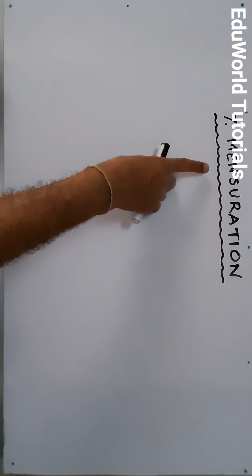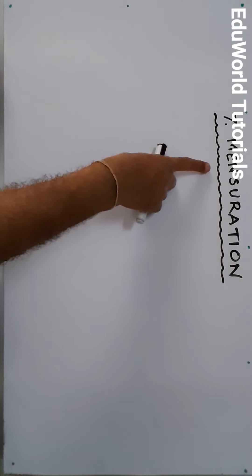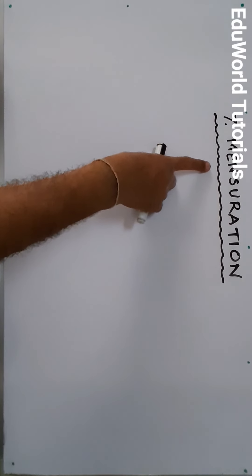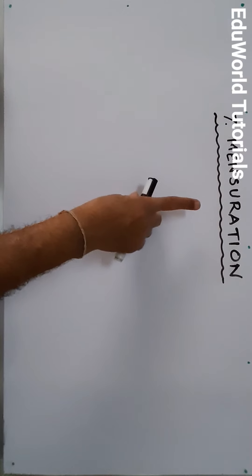Dear students, welcome back. Today we are starting another chapter in Maths 2 — it is mensuration. You had this chapter in 9th standard also, so doing this chapter will not be a difficult task. Initially in this chapter we will see the formulas of various solid figures and plane figures. The entire chapter is basically based on the formula, so you have to remember the formula.